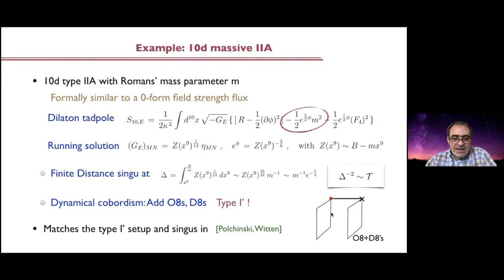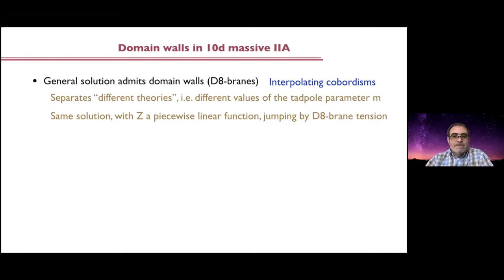You have this running solution for Type IIA with a mass parameter and eventually you hit this wall of nothing — this is a particularly interesting realization of the Polchinski-Witten story of how in Type I prime theory you can develop singularities and eventually find unexpected gauge groups that match the heterotic theory compactification ones. It's a particular realization of this story about dynamical tadpoles. What is new in the upcoming paper is that the general Polchinski-Witten solution admits not only walls of nothing but also domain walls that separate different theories with different values of the tadpole parameter m.